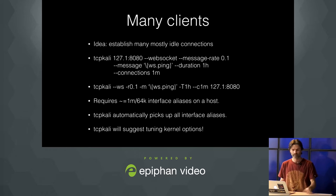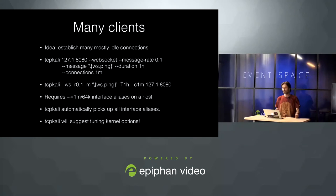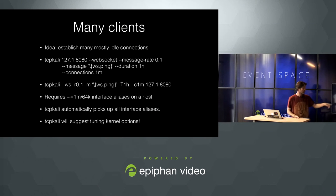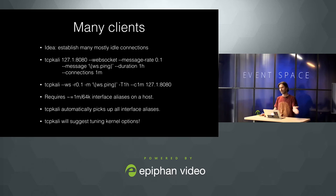Now, many clients. The idea is to be able to establish millions of connections to the same IP address or multiple IP addresses. You can specify multiple IP addresses and ports and it will round-robin the connections between them. You can specify one million as the number of connections. You cannot originate more than about 60K connections from a single host. In order to support more than that, TCP-cali grabs all of the interface aliases from that machine and uses them as the list of source IPs.